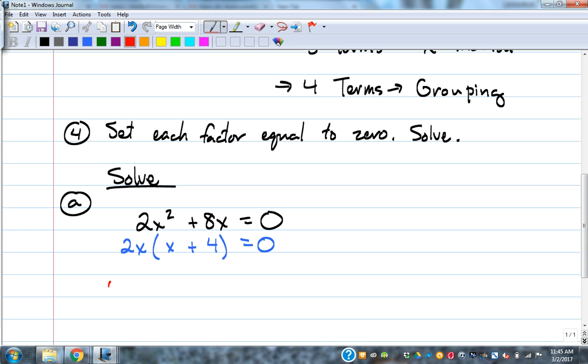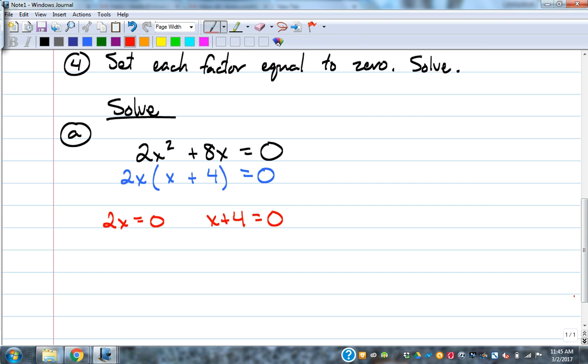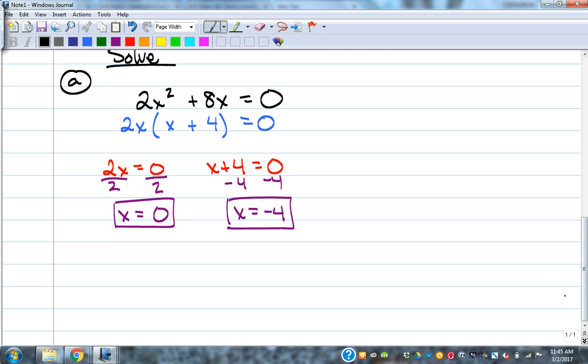Alright. Then we want to look at the parentheses and say, can I factor that any further? There's not an X squared on it, so there's nothing else to do. The last thing you want to do, all we had to do was a GCF on this one. So, the last thing you're going to do is set each factor equal to what? Zero. So, we're going to set 2X equal to zero. X plus 4 equal to zero. And solve each of those.